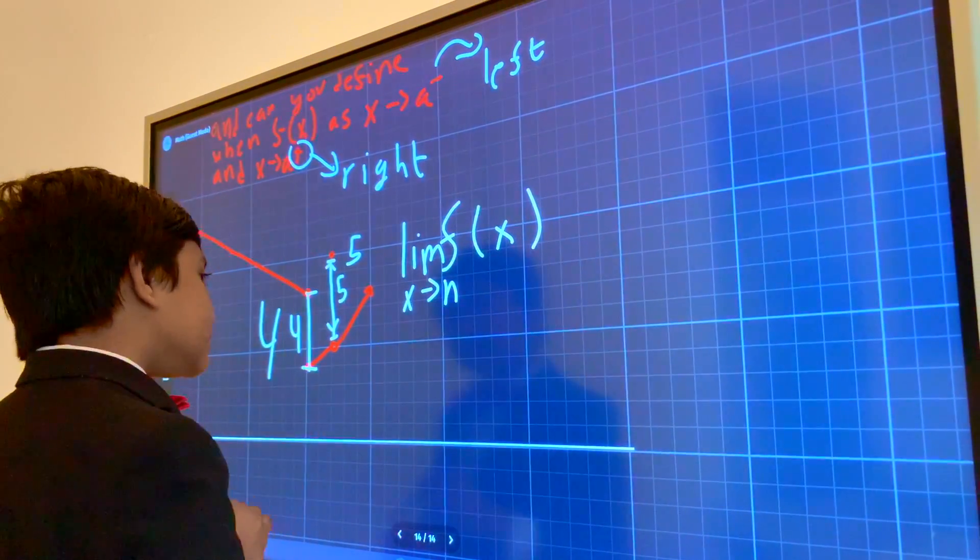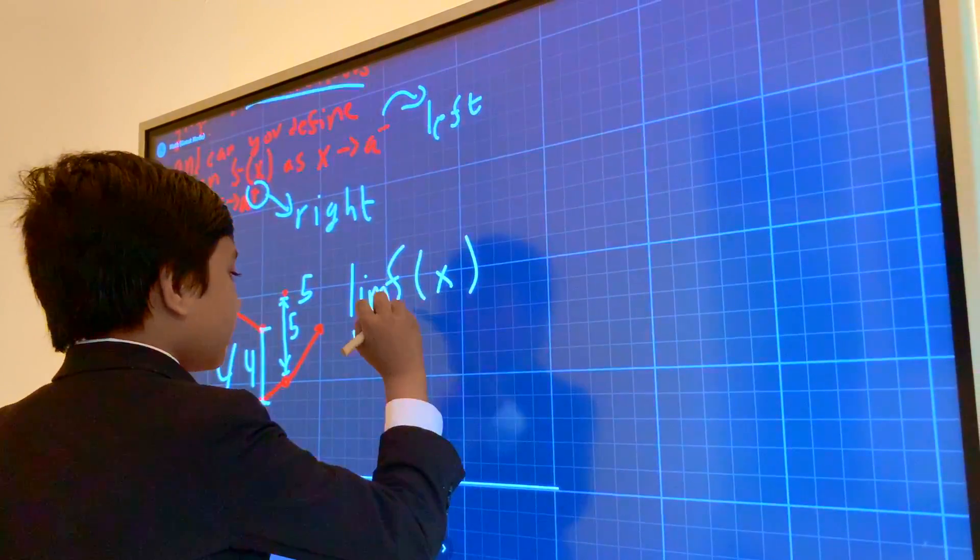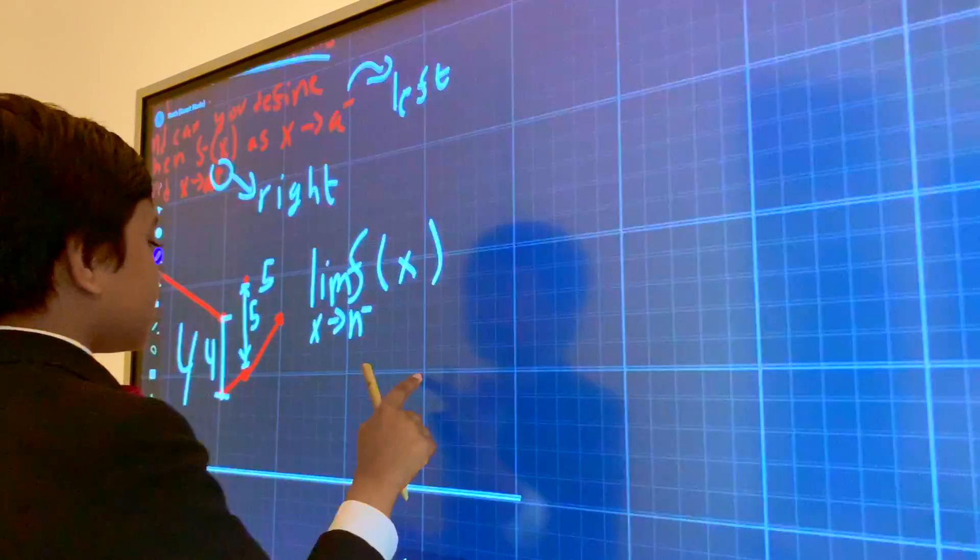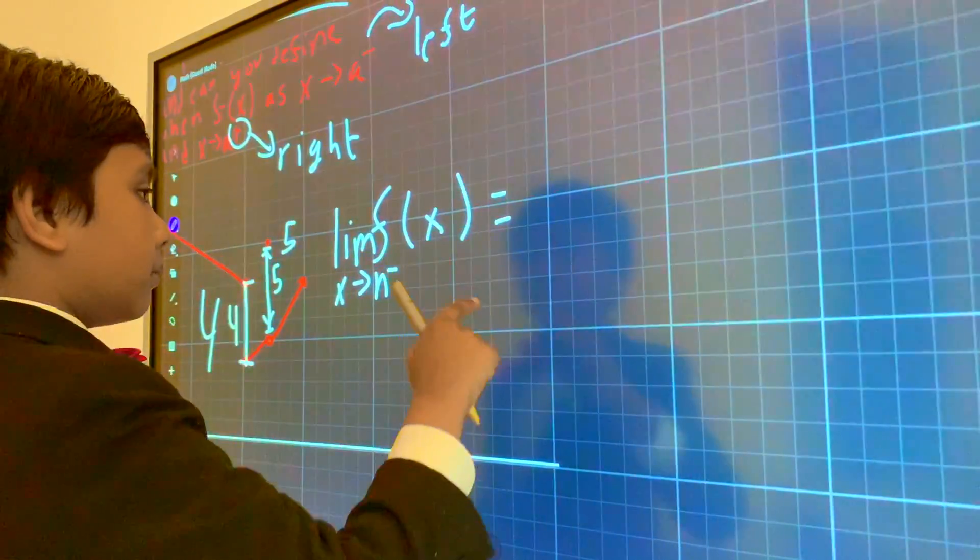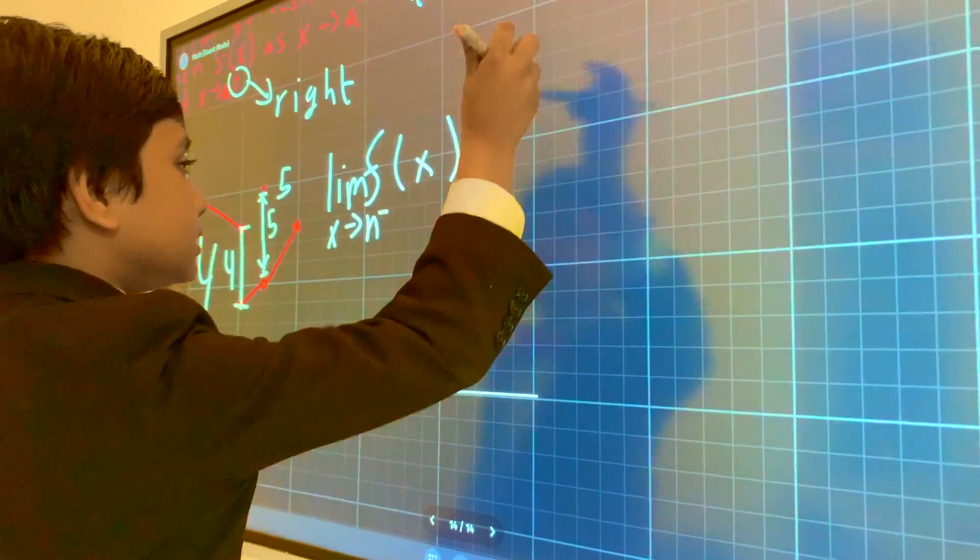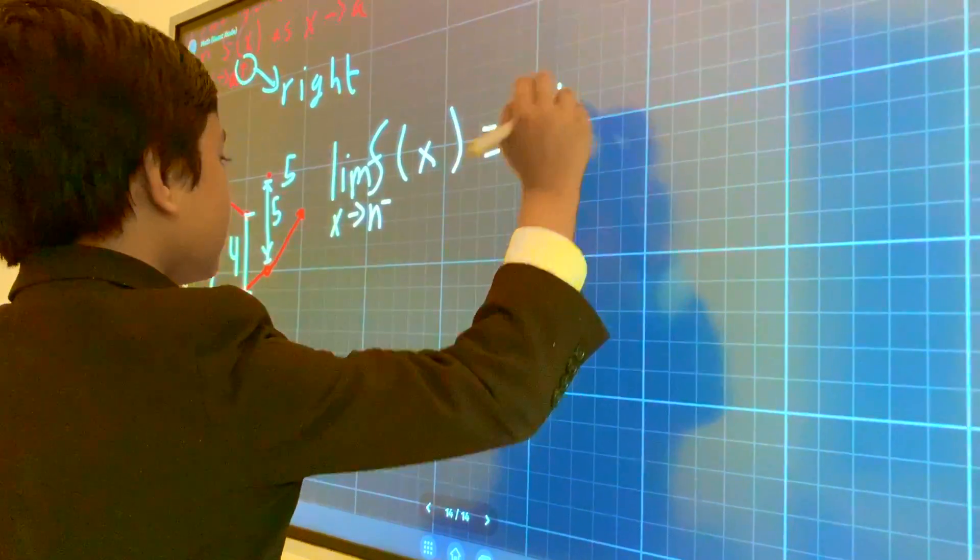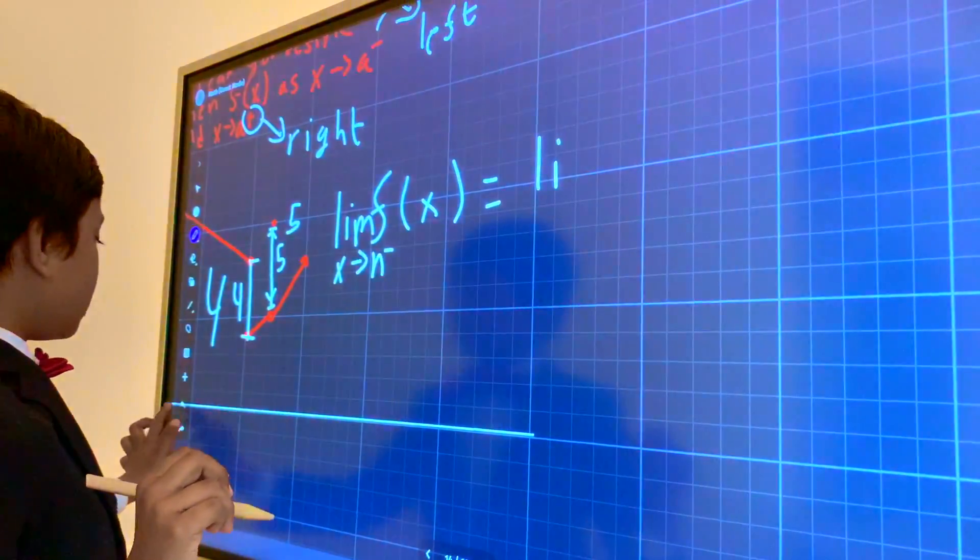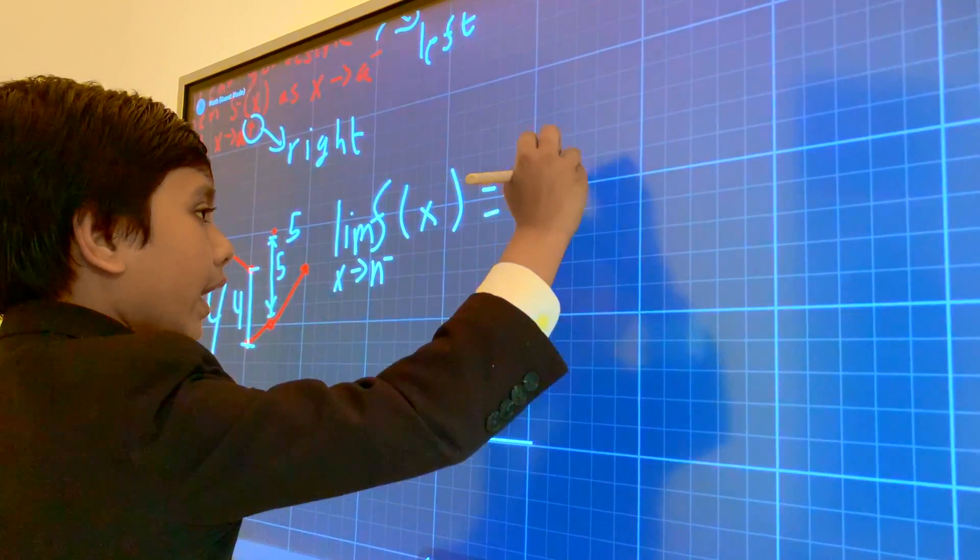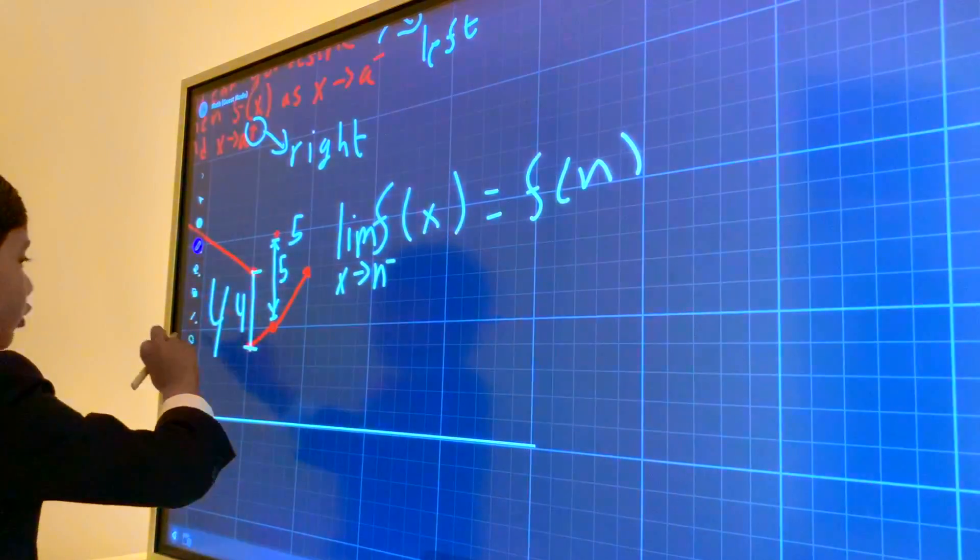F of x as x approaching a, or n we'll use, exist. And then we have to say that the limit of f of x approaching n from the minus side is going to still be f of n.